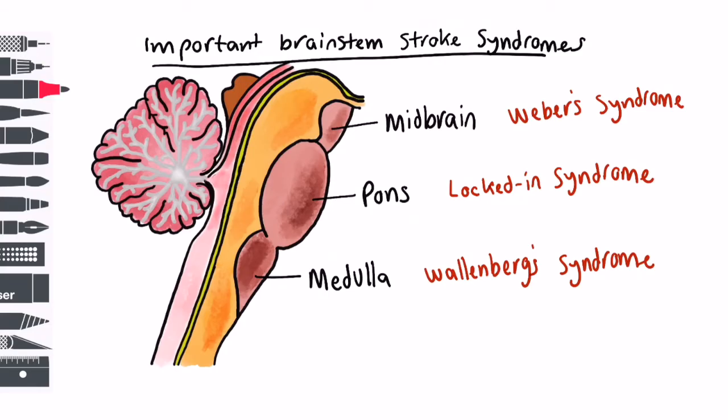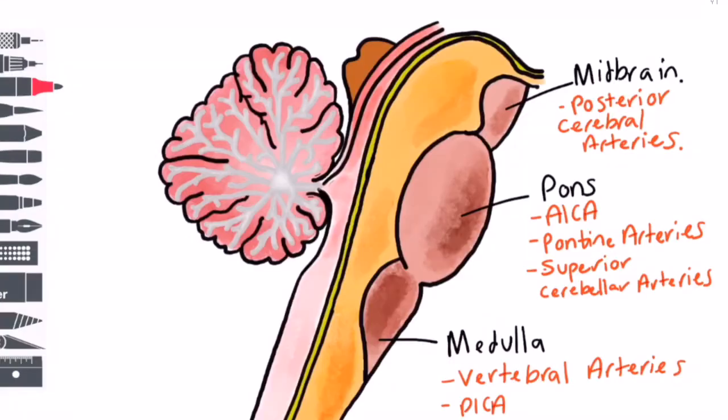Now let's move on to talk about the next syndrome, Weber's syndrome. This is caused by an interruption to the blood supply to the midbrain, typically the posterior cerebral artery.